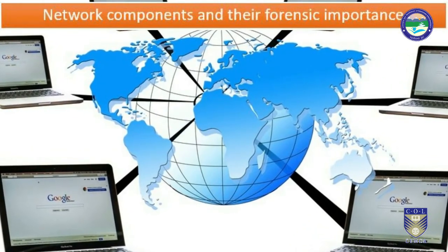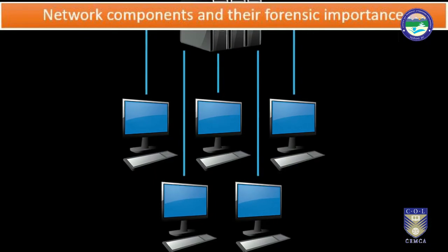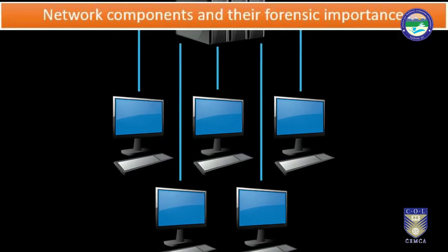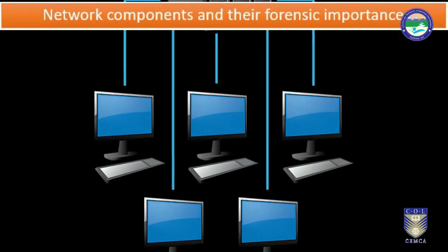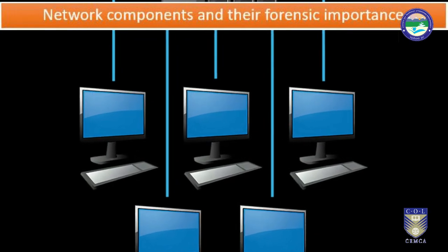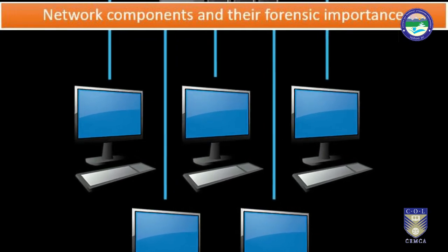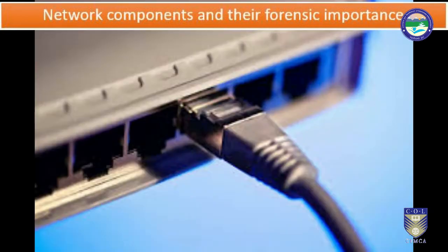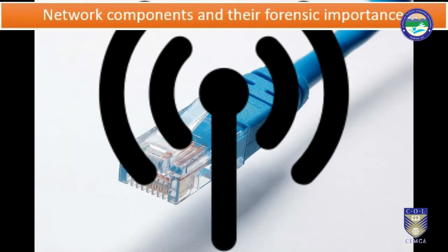A computer network or data network is a telecommunication network which allows computers to exchange data. In computer networks, network computing devices exchange data with each other along network links, called data connections. The connections between nodes are established using either cable media or wireless media. The best known computer network is the internet.